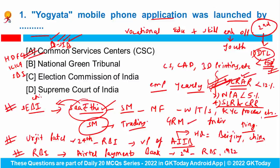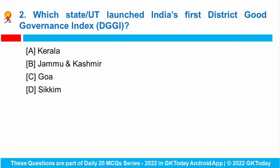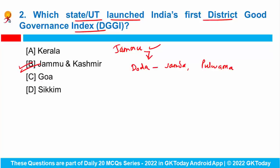Now you have to tell me who is the current chairman of SEBI. Question number two: which state or union territory launched India's first district good governance index? India's first ever district good governance index was released in the union territory of Jammu and Kashmir. In the composite ranking, Jammu district tops the list, followed by Doda, Samba, Pulwama, and Srinagar. This index is a framework that assesses performance under 10 governance sectors with a total of 58 indicators.